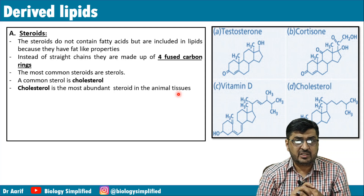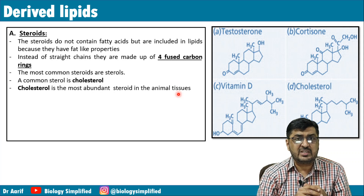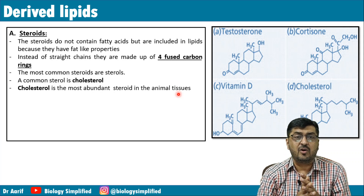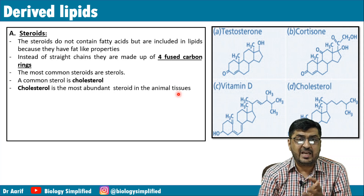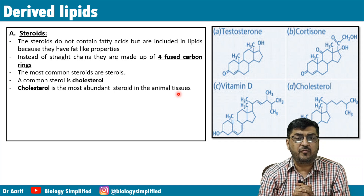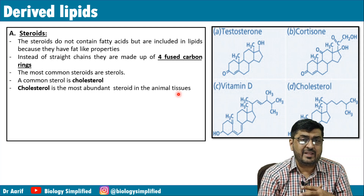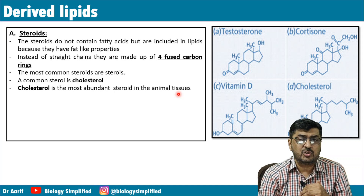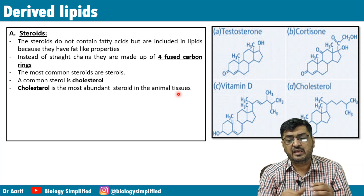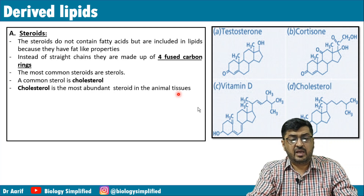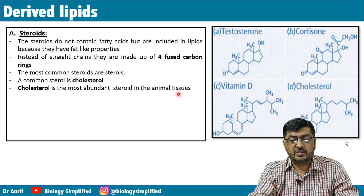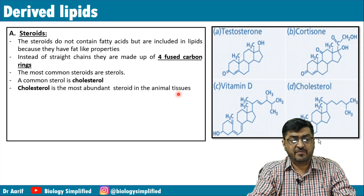In summary: lipids are classified as simple, conjugated, and derived. Simple lipids include true fats (fatty acid + glycerol) and wax (fatty acid + any alcohol except glycerol). Conjugated lipids include phospholipids, glycolipids, lipoproteins, and chromolipids. Derived lipids include steroids. We have finished the topic of lipids; only enzymes remains to be covered.